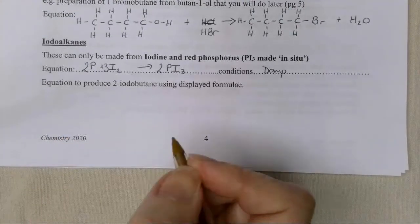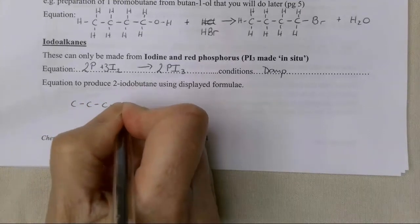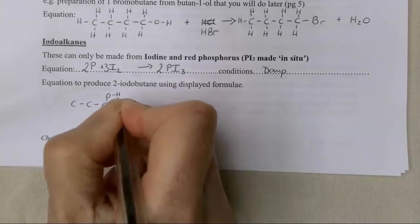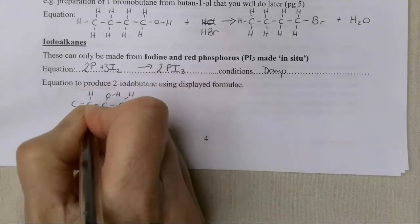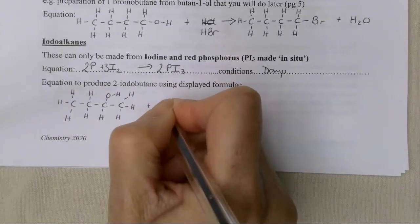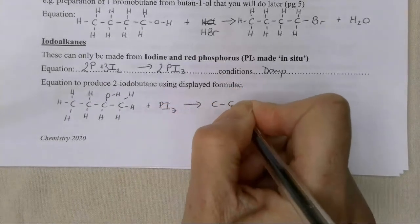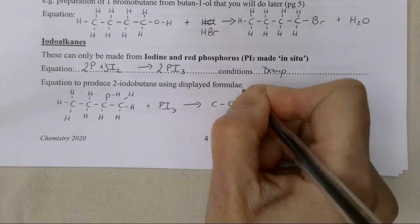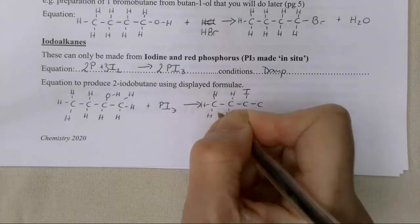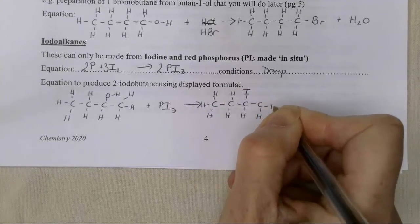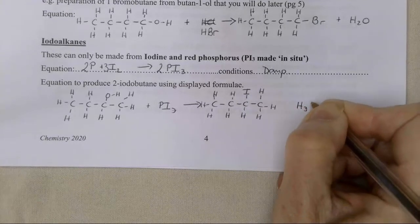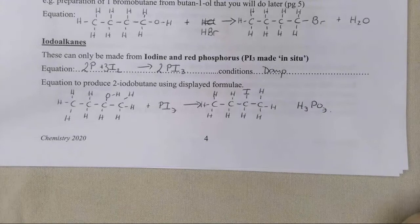To produce 2-iodobutane, I would start with butan-2-ol with the OH group on the second carbon. It doesn't matter which way I number the chain. I always get the smallest possible number. I add my PI3 and I make my iodo compound. I've replaced the OH group with my iodine and I still get the same H3PO3 as my other product.